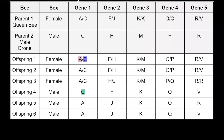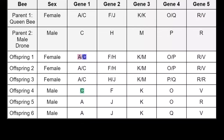Let's see how you did. For gene 1, all of the female offspring must have inherited the A allele from their mother and the C allele from their father, since the mother is the only parent with the A allele. The remaining male offspring, offspring number 5 and number 6, must have also inherited the A allele from their mother, since the father does not have an A allele to pass on to his offspring.